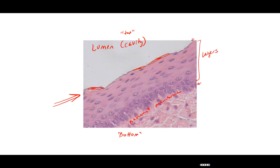Your stratified squamous epithelium has the job of protection. You will see stratified squamous epithelium lining places where you have lots of abrasion and cell loss. You'll see it lining the mouth, the esophagus, the rectum and anus, the vagina, and it makes the outermost layer of the skin — the epidermis. All of these are good examples of locations for stratified squamous.